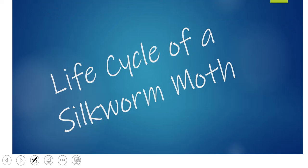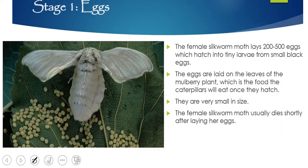Stage one of the silkworm moth life cycle: the female silkworm lays about 200 to 500 eggs, which hatch into larvae. The eggs are laid on the leaves of the mulberry plant, which is the food the caterpillars will eat once they hatch — they love to eat mulberry plant leaves.